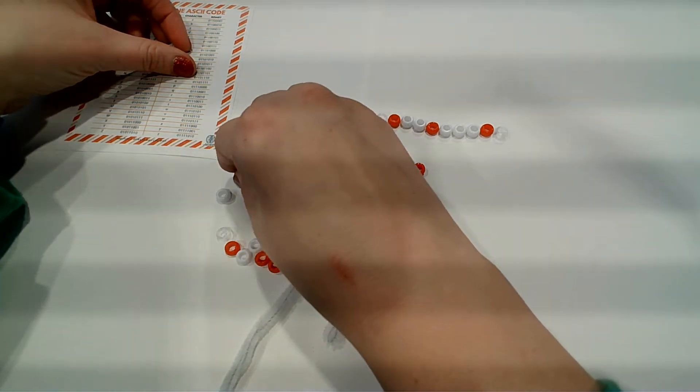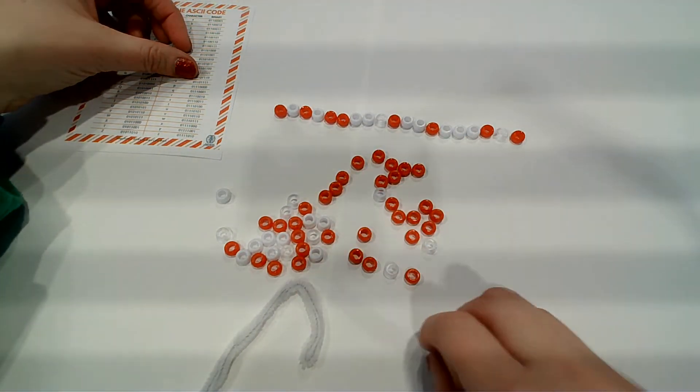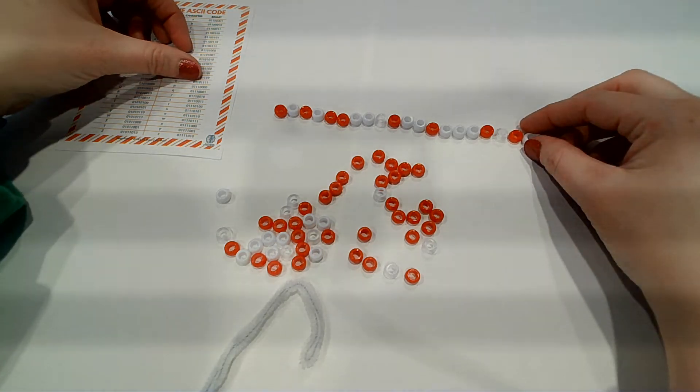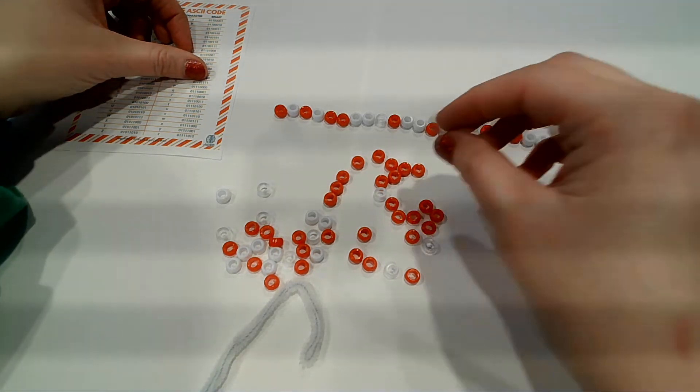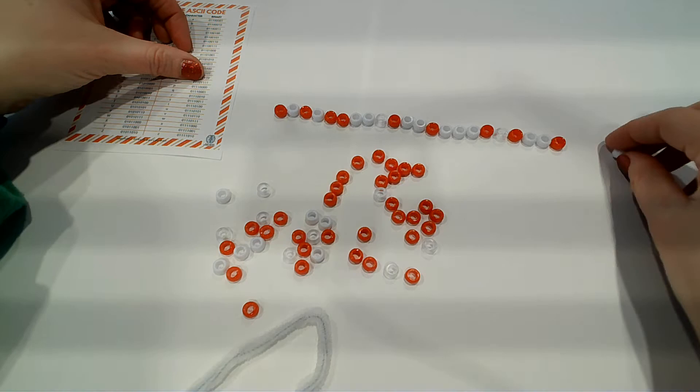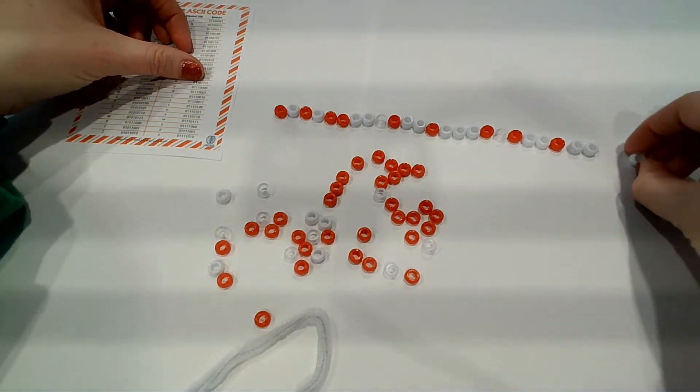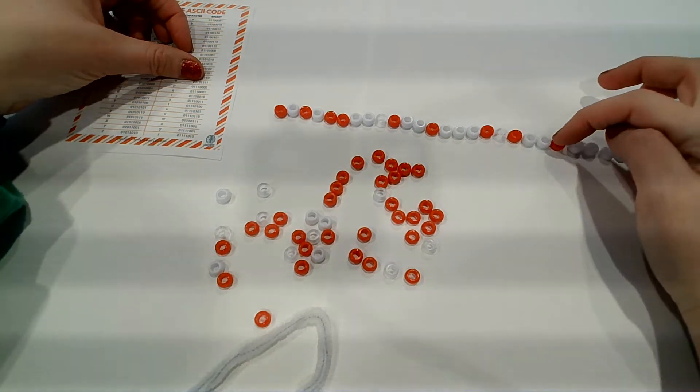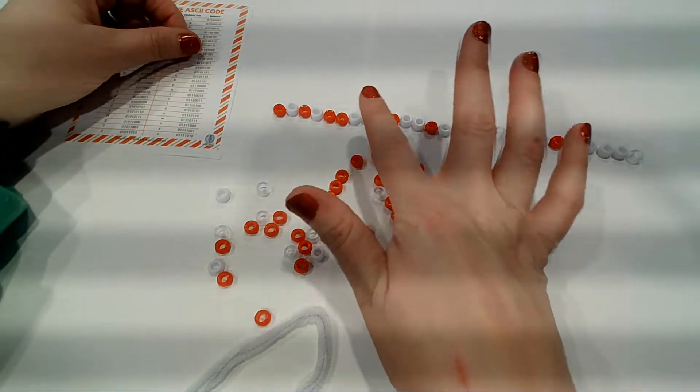And I'm going to do O. So zero, one, one, one, zero, one, one, one. So there's my spacer again. So I've got S, N, O.